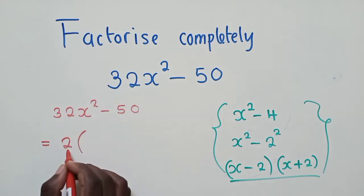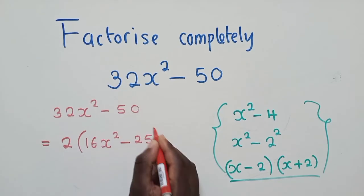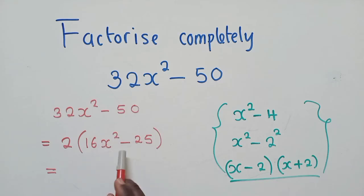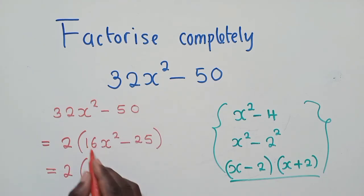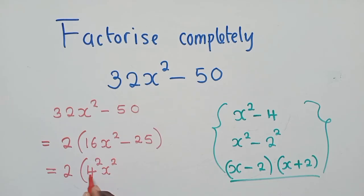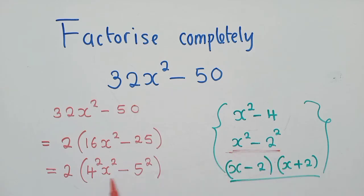We have factored out a 2. Inside we shall have 16x² minus 25. So now, after getting this, are we done? No, we are not done. Because now we can apply the difference of two squares inside. The square root of 16 is 4, so we write 4² — that gives us 16. And the square root of 25 is 5, so we write 5². This is the stage we've reached — the same stage as in our example.